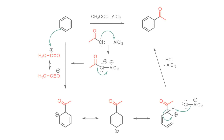The acid chloride and Lewis acid interact to form an activated complex, which then collapses to the highly electrophilic acylium ion. This is then attacked by benzene, a resonance-stabilised sigma-complex intermediate is formed, which is then deprotonated to give the acylbenzene product.